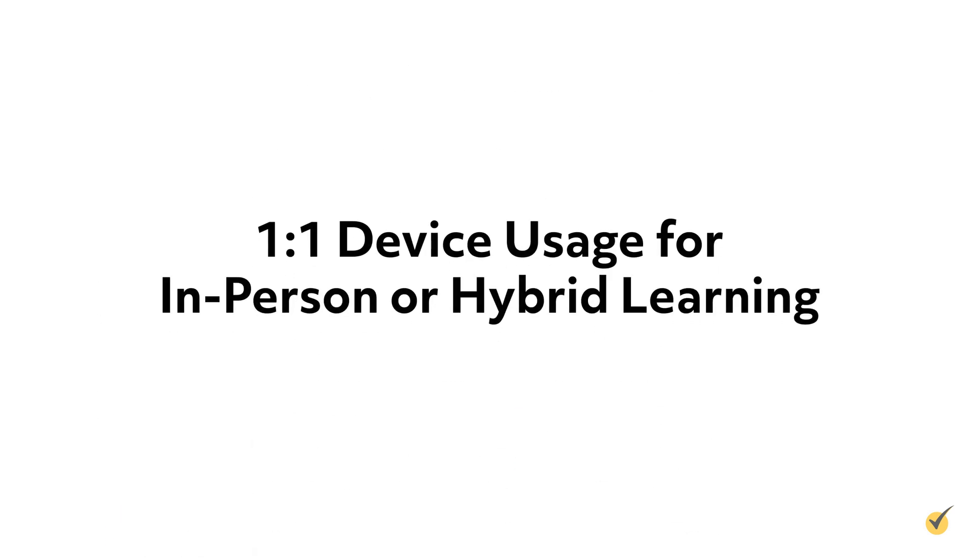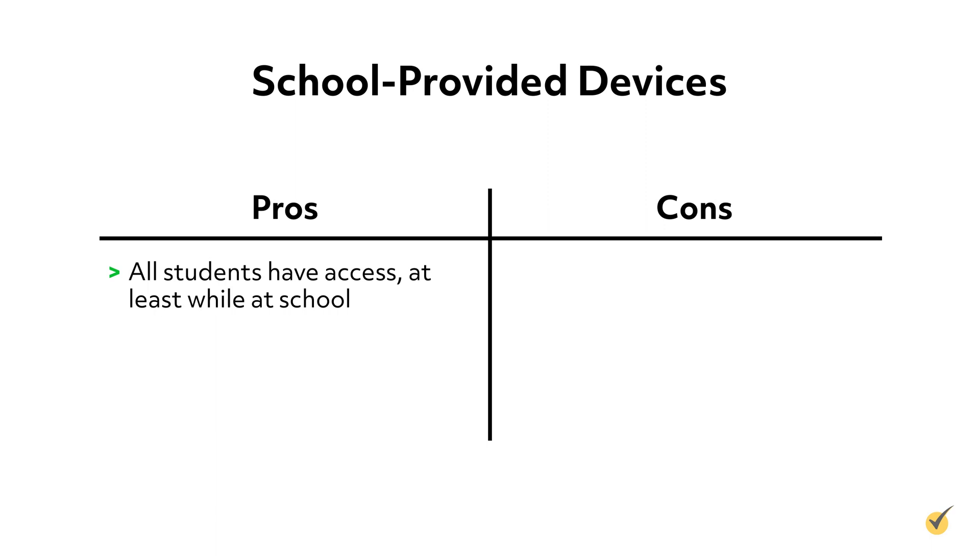Many districts now use a one-to-one approach, lending each student a device for the school year. These devices frequently become part of the school routine, with assignments distributed and submitted through a Learning Management System, or LMS. Depending on district policies, students may be allowed to take the devices home or may be required to leave them at school each day. If students are in a hybrid learning program, having an assigned device allows consistent access to school content and bridges the gap between school and home environments. Benefits include ensuring each student has equal access to the needed tools, at least while in the classroom.